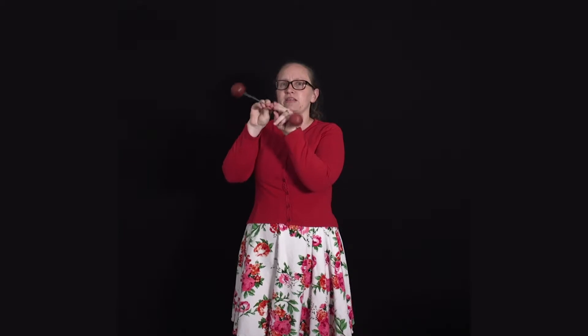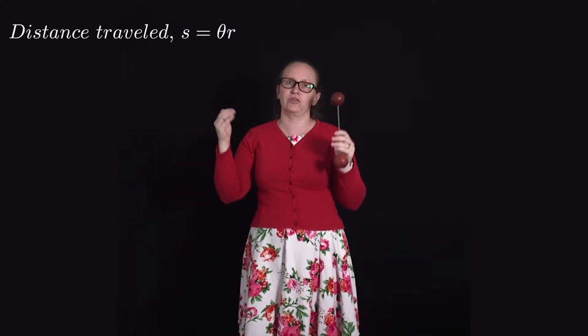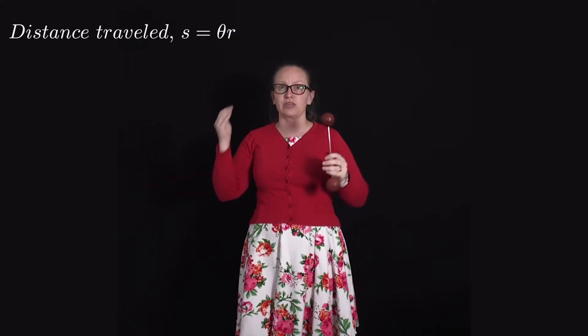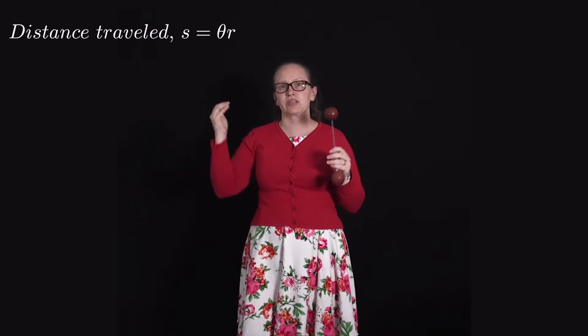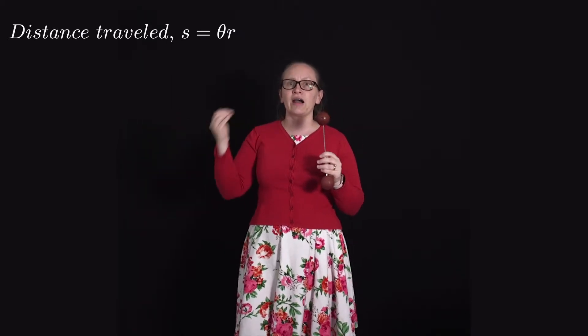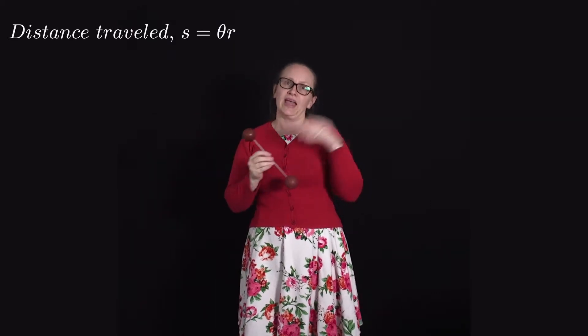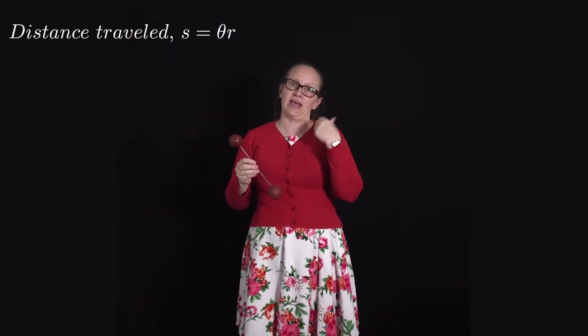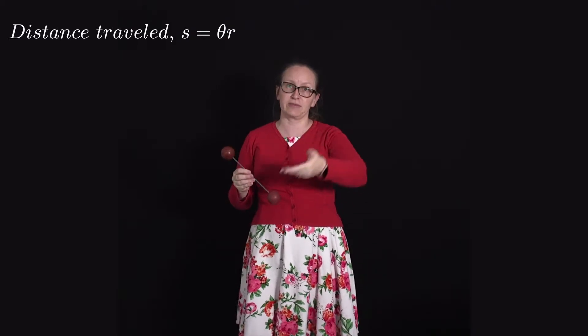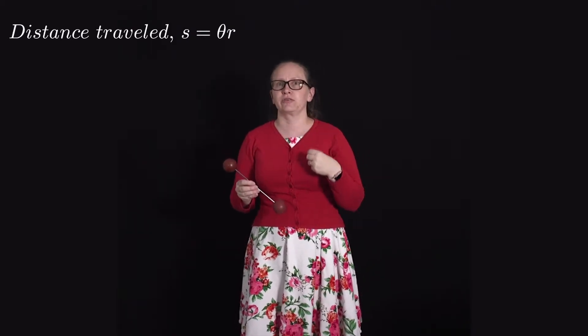When considering distances travelled, we use the arc length of a circle. If something is undergoing circular motion — moving in a circle — it's tracing out a circular path. The distance it's travelled, s, is related to the angle it's turned through, theta, by the equation s = θr, where r is the radius, s is the distance travelled, and theta is the angular displacement — the total angle it has travelled through.